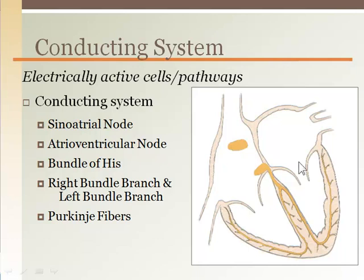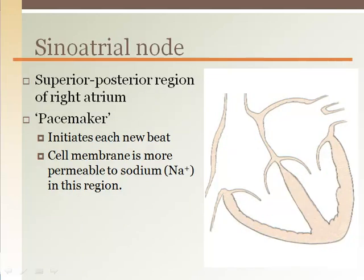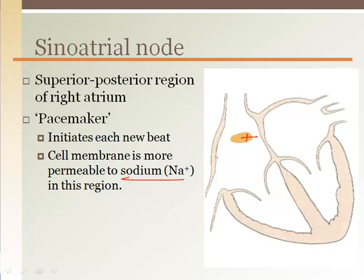The role of the conducting system is to send an electrical impulse to all regions of the heart in a particular order. This electrical impulse, as seen on an electrocardiogram, is the signal each cell needs to tell them to start contracting. The sinoatrial node is a specialized region in the superior posterior region of the right atrium, also called the pacemaker because this is where each heartbeat begins. The cells in this region are more permeable to sodium, so as sodium leaks in, it causes the inside of the cell to become more positive, or depolarize, until it reaches threshold and an action potential occurs. This action potential then causes the depolarization of adjacent surrounding cells in a manner that spreads throughout both the right and left atria.